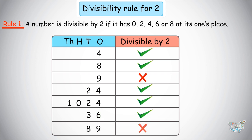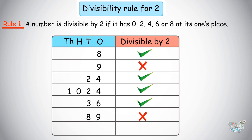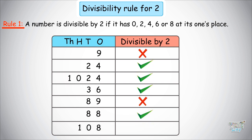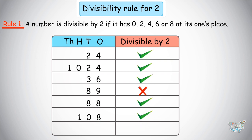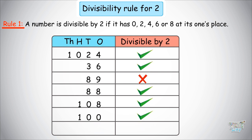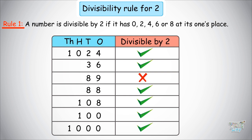89 — no, because there is a 9 in the ones place. 88 — yes, because there is an 8 in the ones place. 108 — yes, because there is an 8 in the ones place. 100 — yes, because the ones place digit is a 0. 1000 — yes, because there is a 0 in the ones place.